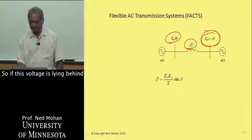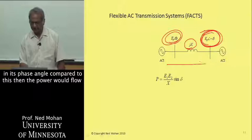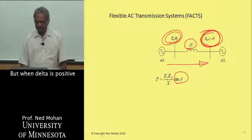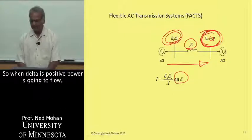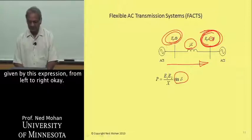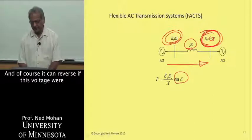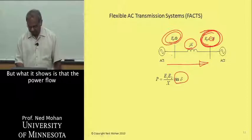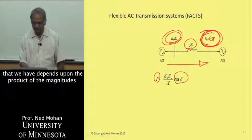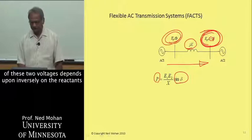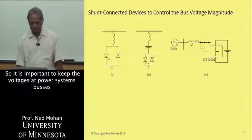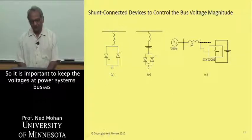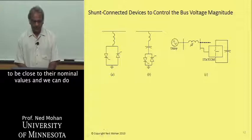If this voltage is lagging behind in phase angle compared to this, then power flows from here to here, given by sine delta. When delta is positive, power flows from left to right given by this expression. Of course it can reverse if this voltage leads. This shows that power flow depends on the product of the two voltage magnitudes, inversely on the reactance, and sine of the angle delta, which is the phase angle difference between the two voltages.